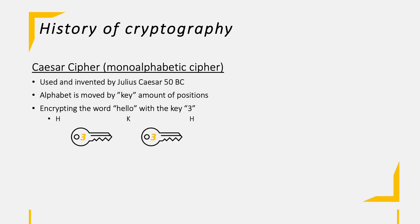So an H would become a K because we move the alphabet by three positions. And when we decrypt the K, obviously, we move the alphabet back three positions and receive our H back.